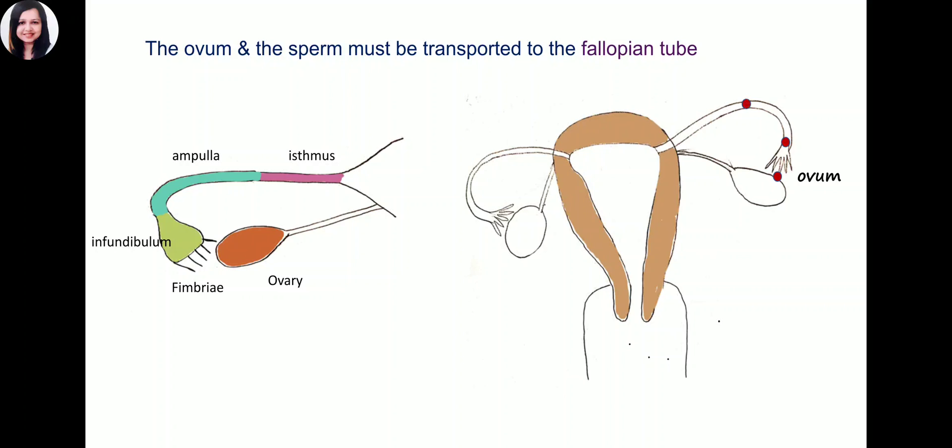Within the fallopian tube, the ovum is propelled by peristaltic contractions and ciliary movement. If fertilization occurs, the blastocyst will be implanted in the endometrium. If fertilization does not occur, the ovum will degenerate in about 12 to 24 hours and get phagocytosed. The ovum is viable for 24 hours but may remain in the female tract for 48 hours.